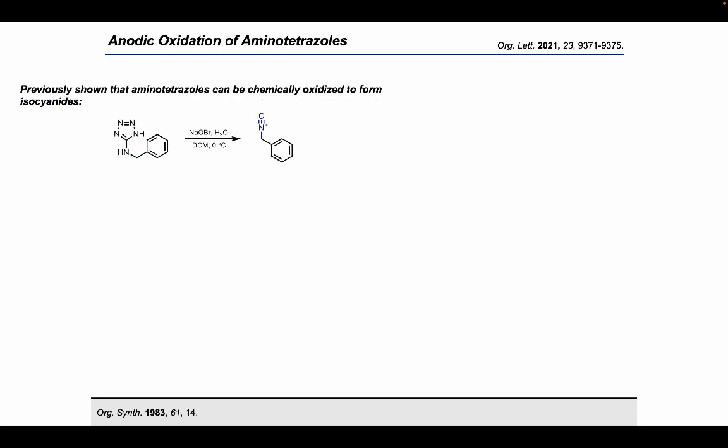Now, it's been previously shown that aminotetrazoles can actually be chemically oxidized to form isocyanides, for example, here, using sodium hypobromite. However, this can also be achieved with things like bromine and triethylamine, or lead tetraacetate and triethylamine. And perhaps more excitingly, it can even be achieved anodically. However, in the original report, it was only demonstrated on three examples due to the harsh conditions needed.